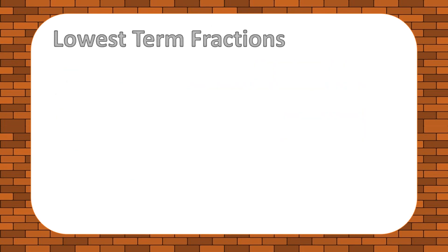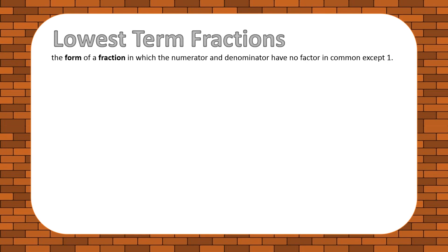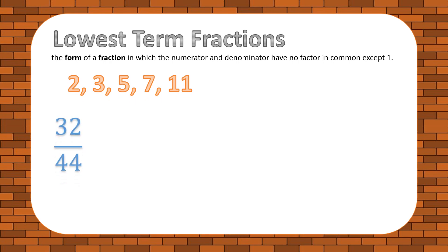The lowest term is a form of fraction in which the numerator and denominator have no common factor except one. We can use two, three, five, seven, and eleven as possible factors. Let's try 32 out of 44 — is there any common factor for the numerator and denominator? Yes, two is the common factor for 32 and 44.